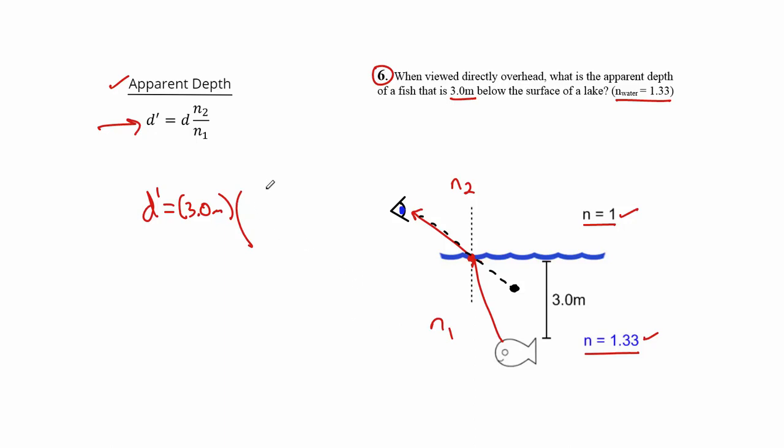In this case we're going to have 1 over 1.33. This is one we can actually do in our heads. So D prime equals 3, and 1 over 1.33 is the same as 4 thirds. So I'm going to divide by 4 thirds, which is the same thing as multiplying by 3 fourths. And 3 times 3 fourths, in this case is 9 fourths meters, which is 2.25 meters.